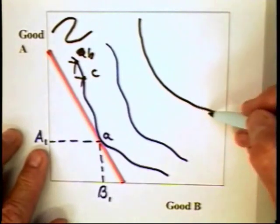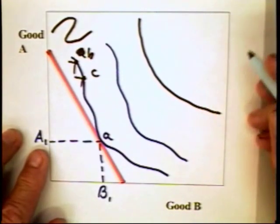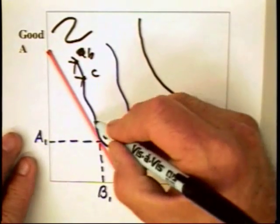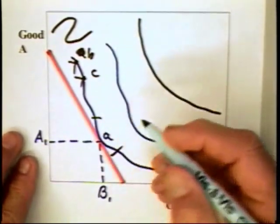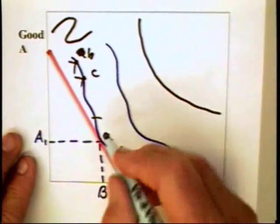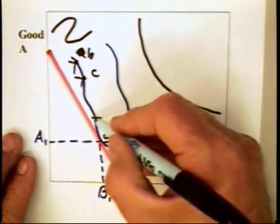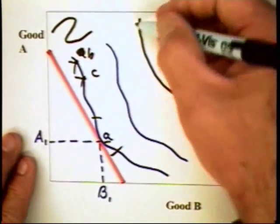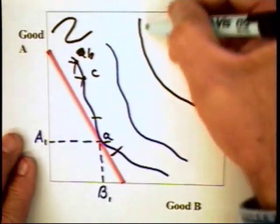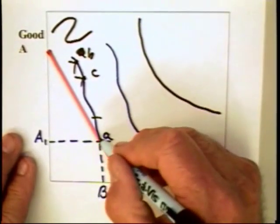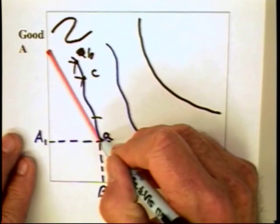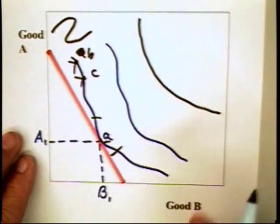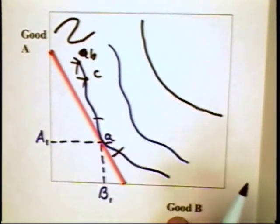Why do we draw indifference curves looking like this? We draw them by simple convention, but also notice that within the relevant range of the point of tangency or consumer equilibrium, the indifference curve does look like the standard bowed curve. Economists draw them this way because it resembles the curve within the relevant range of equilibrium, and also because they are simply easier to draw.